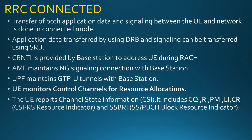The C-RNTI is provided by the base station (gNodeB) to address the UE during the RACH procedure. The AMF maintains the NG signaling connection with the base station, and the UPF maintains the GTP-U tunnel with the base station.